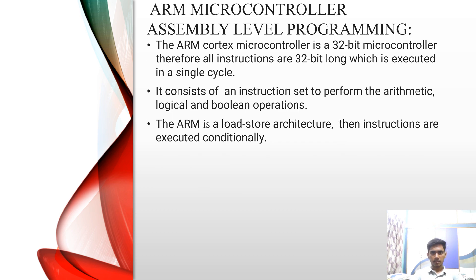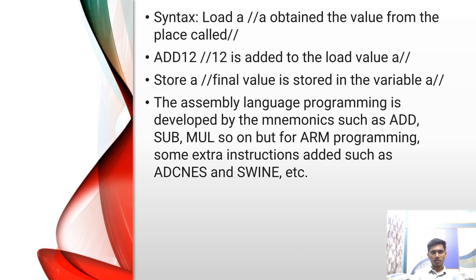Moving on to the microcontroller assembly level programming. The ARM Cortex microcontroller is a 32-bit microcontroller. Therefore, all instructions are 32-bit long and are executed in a single cycle. It consists of an instruction set to perform arithmetic operations, logical operations and boolean operations. The ARM is a load and store architecture. The instructions are executed conditionally. The assembly language programming is developed using mnemonics such as ADD, SUB, MUL and so on. But for ARM programming, some extra instructions are added such as ADC, AND, SWI etc.